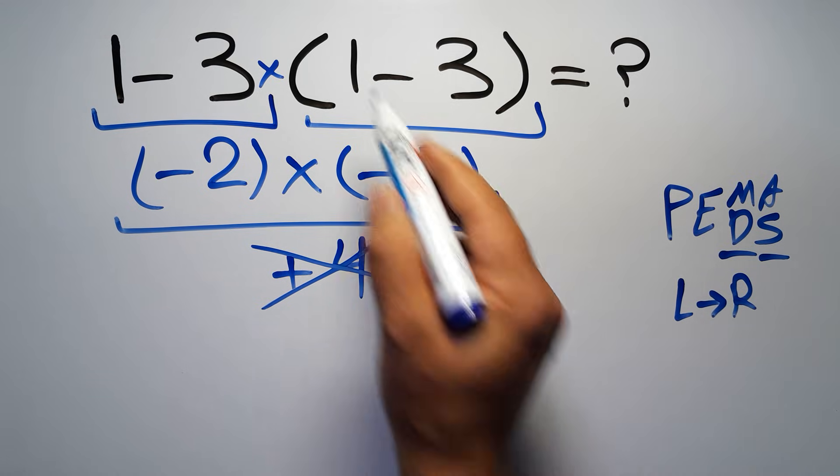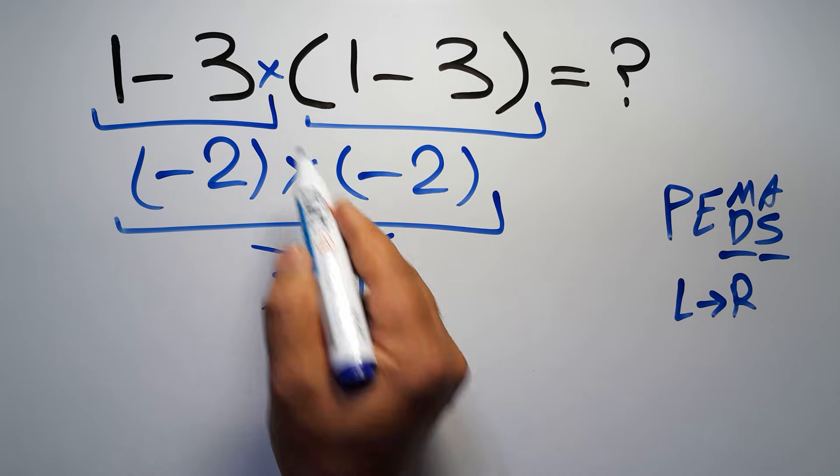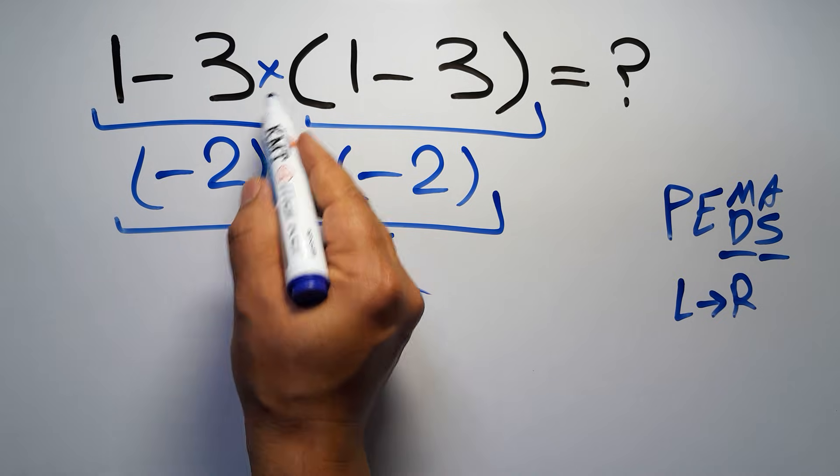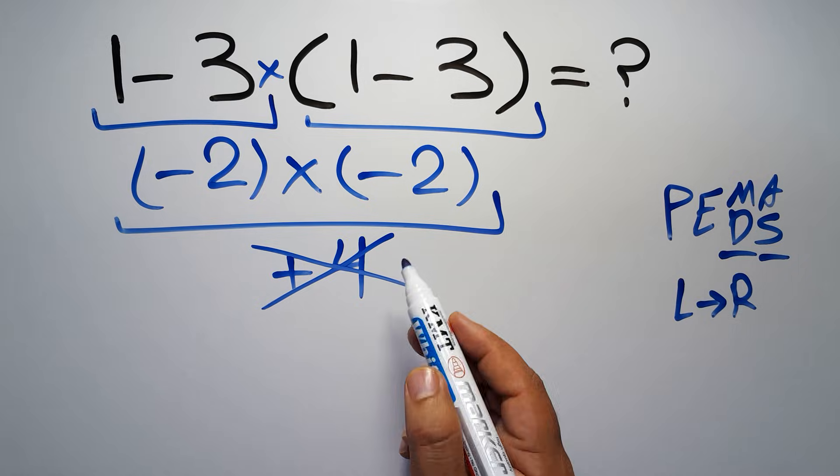So according to the PEMDAS, first we have to do this parentheses, then this multiplication, and finally this subtraction. If we do this subtraction before this multiplication or this parentheses, it is wrong.